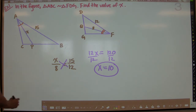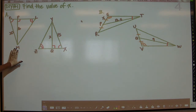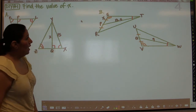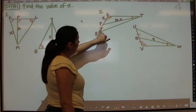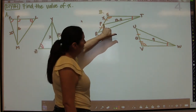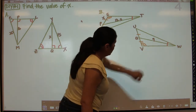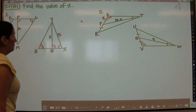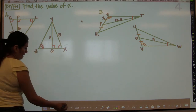Now we'll have you try two practice problems. Part A deals with the altitude theorem — you can see the altitudes there. Part B involves medians because you have the midpoint marked, but also angle bisectors in those two cases. One of those three theorems will help you figure out the value of X.